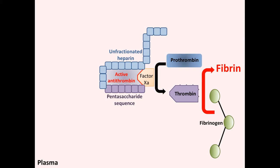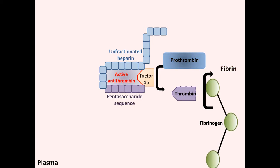This leads to its effect in the plasma to stop the conversion of thrombin from prothrombin, thereby inhibiting the production of fibrin from fibrinogen. The end result is preventing the formation of any further clots.